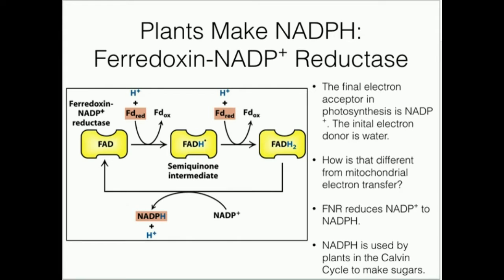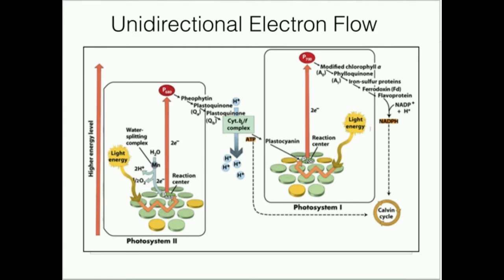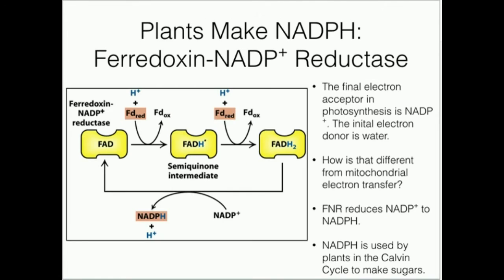We have NADPH, but plants make it in a very different way than humans. Humans use the pentose phosphate pathway and malic enzyme. Plants do it through a very different mechanism — through an enzyme involving ferredoxin and NADP+, called ferredoxin NADP+ reductase.